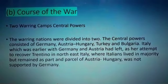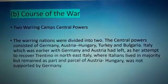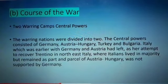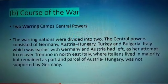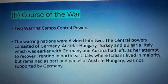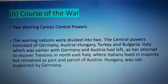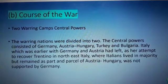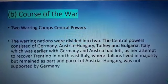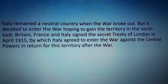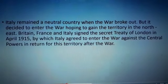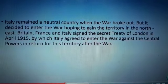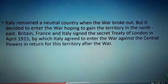Course of the War — The Warring Camps. World War I began in 1914 after the assassination of Archduke Ferdinand. Germany, Austria-Hungary, Bulgaria, and the Ottomans were the Central Powers. France, Great Britain, Russia, Italy, Romania, and the United States were the Allied Powers. Britain, France, and Italy signed the Secret Treaty of London in April 1915, by which Italy agreed to enter the war against the Central Powers.